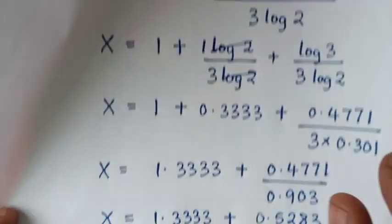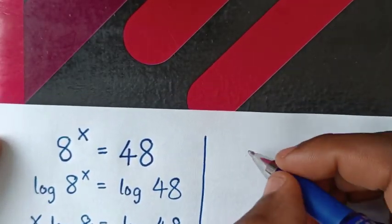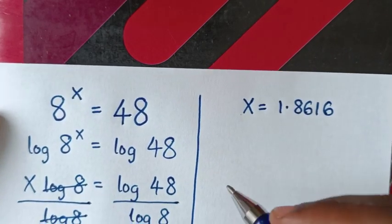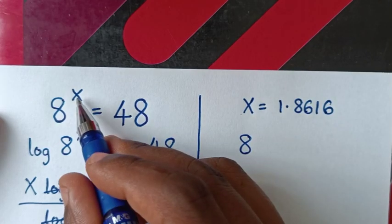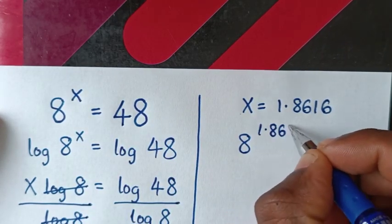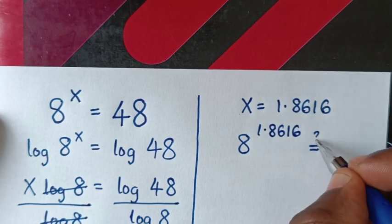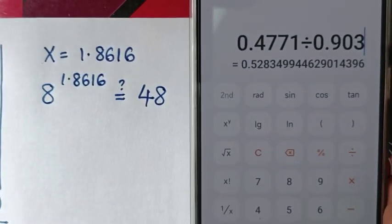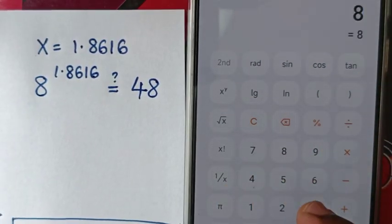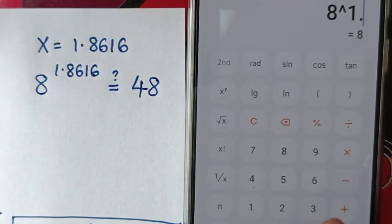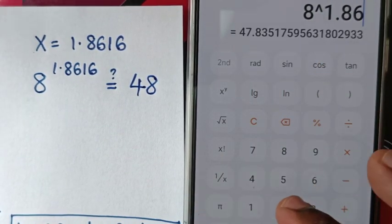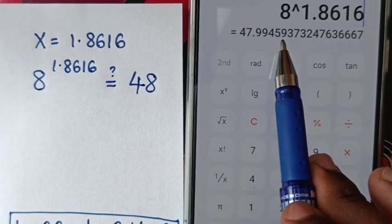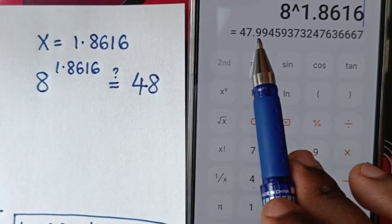Now let's check this answer. From x equals 1.8616, we substitute back into our problem: 8 power 1.8616. Calculating this in the calculator gives 47.9946 when rounded to 4 decimal places.